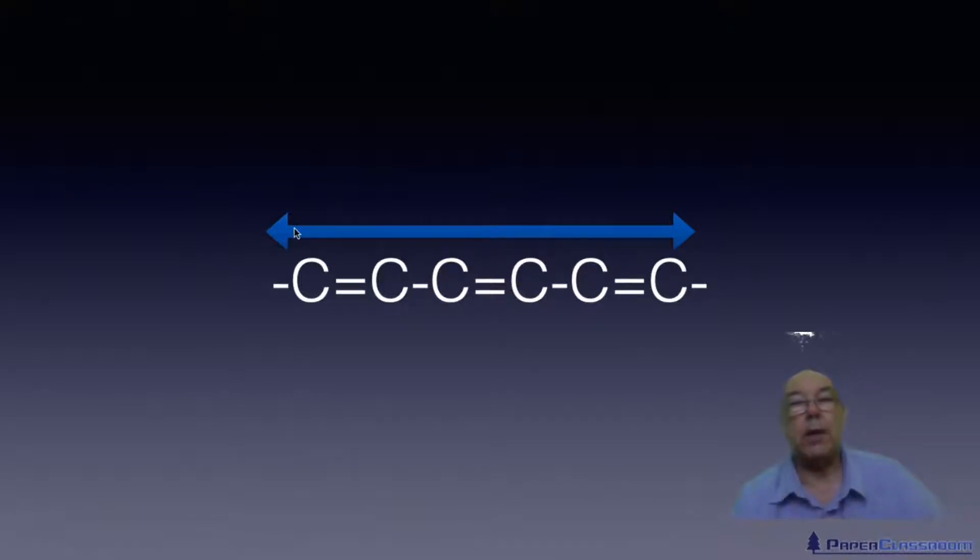And when it gets to this end of the chain, exactly the same. It slows down, turns around, goes back again. Now when the electron slows down, it's got to give out energy to slow down and it gives out that energy in the form of light.